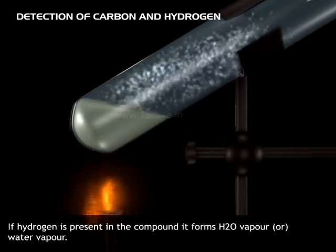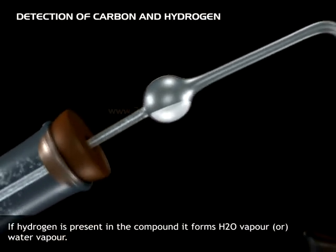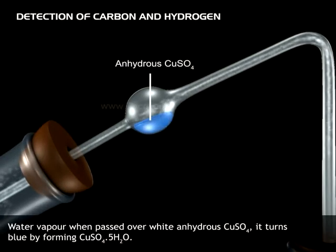If hydrogen is present in the compound, it forms H2O vapor or water vapor. Water vapor, when passed over white anhydrous CuSO4, it turns blue by forming CuSO4·5H2O.